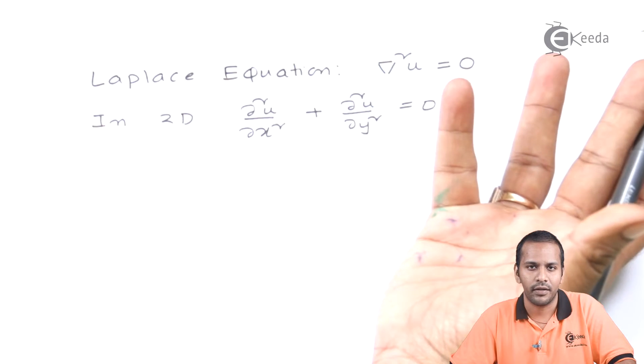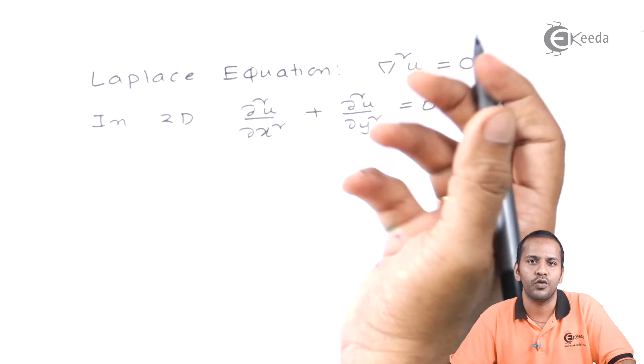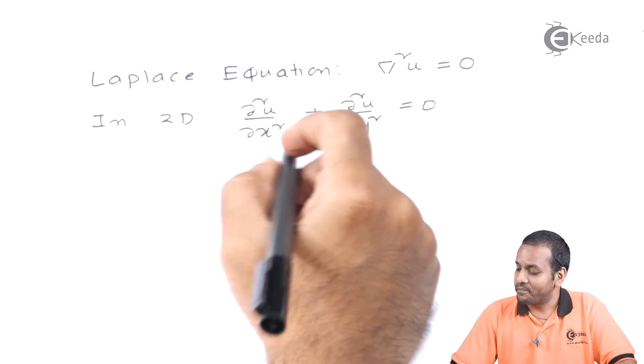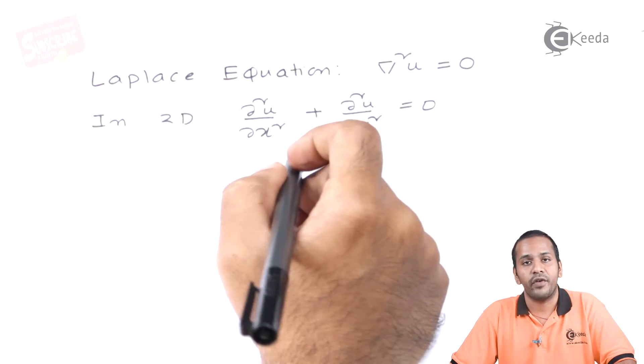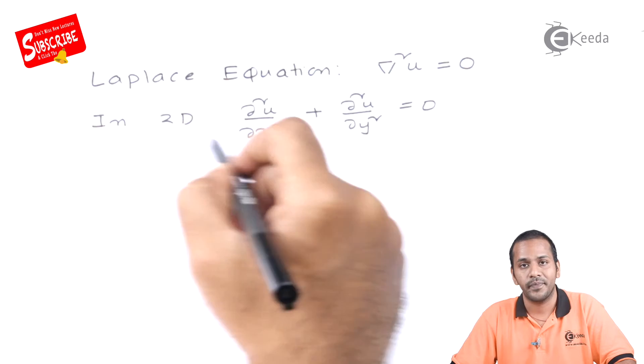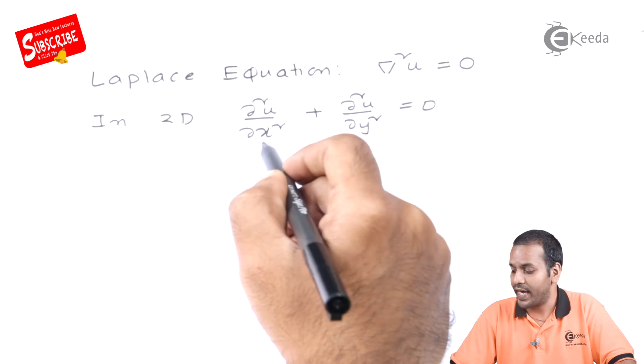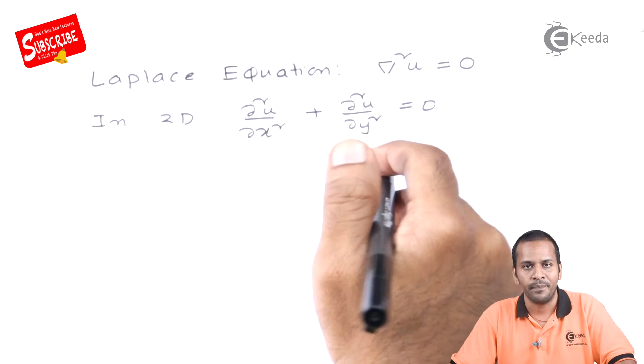In the case of 3D, one more term will be in addition, that is ∂²u/∂z². If you observe this equation, there is no time parameter - it's only space, that is x and y.